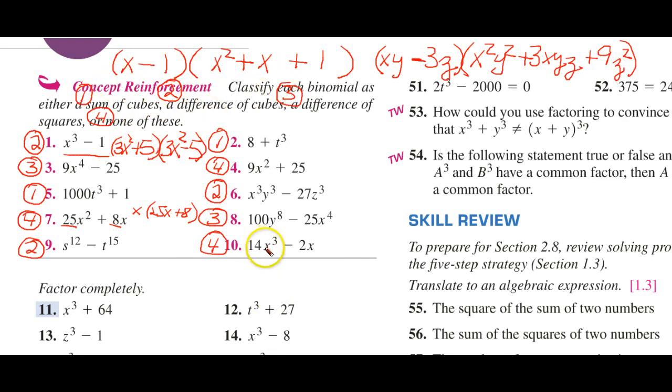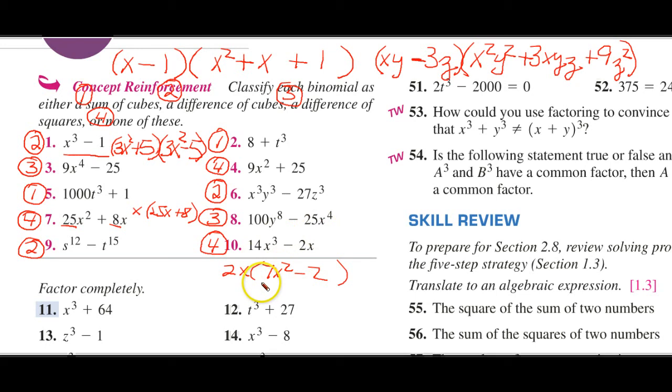And then number 4. Again, you can factor out 2x out of each one. But this would give you 7x squared minus 2. But that's as far as you can go.